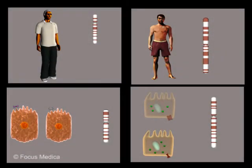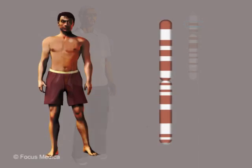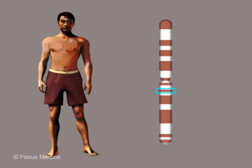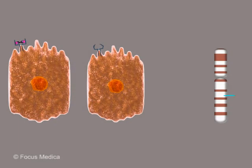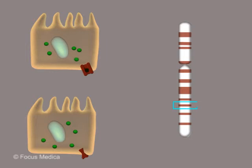Primary hemochromatosis is further classified into type 1 or classic hemochromatosis (HHC), type 2 or juvenile hemochromatosis (JHC), type 3 or transferrin receptor mutation, and type 4 or ferroportin mutation.